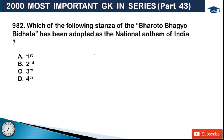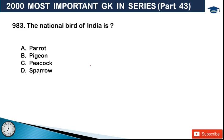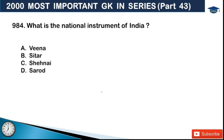Next: which stanza of the Bharat of Rabindranath Tagore has been adopted as the national anthem of India? Jana Gana Mana has five stanzas in total. The first stanza was adopted as our national anthem. Next: the national bird of India - the answer is peacock. Our national bird is the peacock. Next: what is the national instrument of India? Options are veena, sitar, shehnai, and sarod. The answer is veena - our national instrument is the veena.